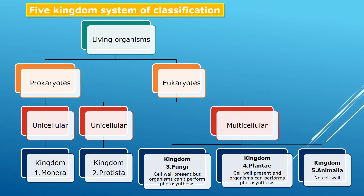In the five kingdom system of classification, living organisms can be classified into prokaryotes and eukaryotes. Prokaryotes do not have a nucleus with bound cell organelles and have a simple structure. Eukaryotes contain a nucleus with bound cell organelles and have a complex structure. In prokaryotes, all organisms are unicellular, so kingdom Monera belongs to the unicellular prokaryotic group.